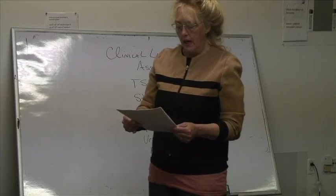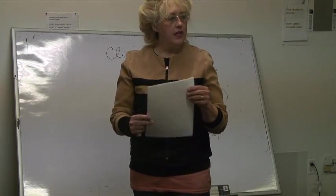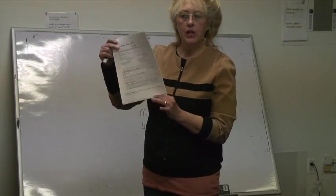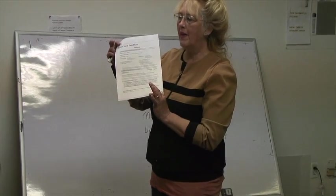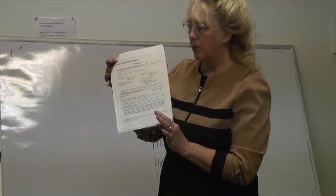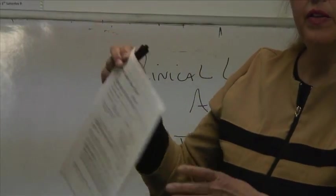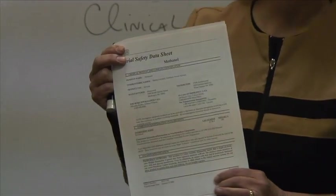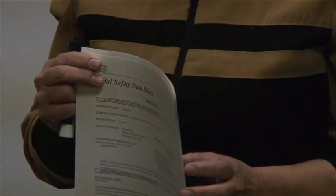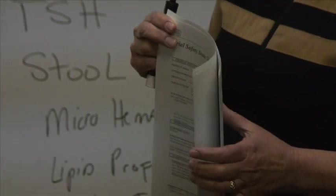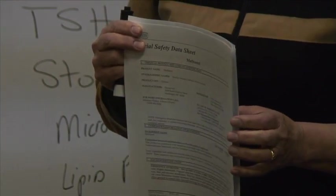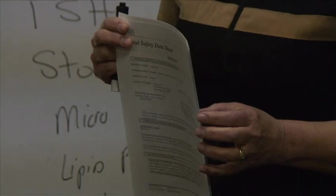Material safety data sheets are usually hanging up by the materials or by the eyewash sink, encased in plastic for everyone to see. You need to know what kind of chemicals you're dealing with, because a chemical spill could be immediately dangerous to life and health.